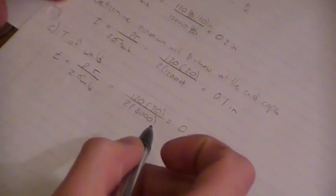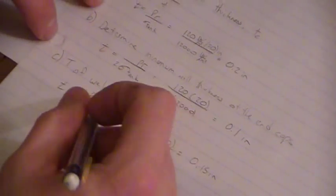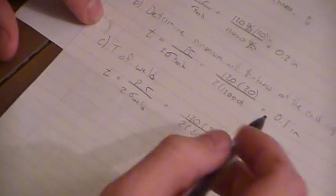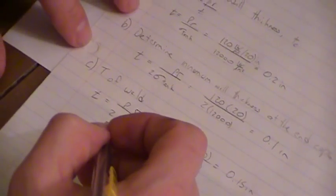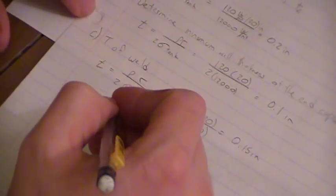For the final part of the problem, it was to find the thickness of the weld that goes around the end caps. For this problem, we used the same formula that we used for the minimum wall thickness of the end caps. We used the stress for the thickness of the weld in this one. So we used T equals PR over 2 times the stress of the weld.